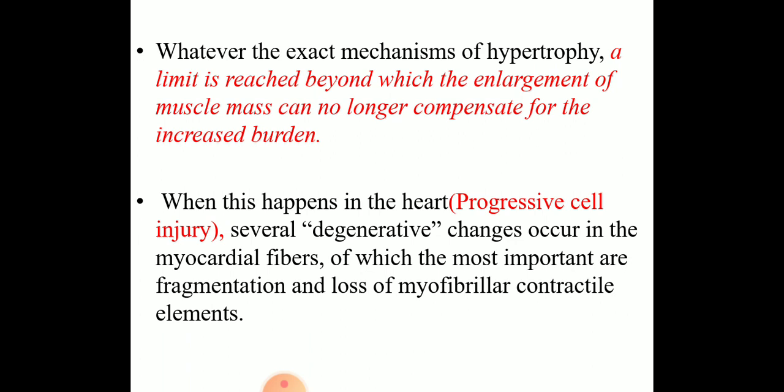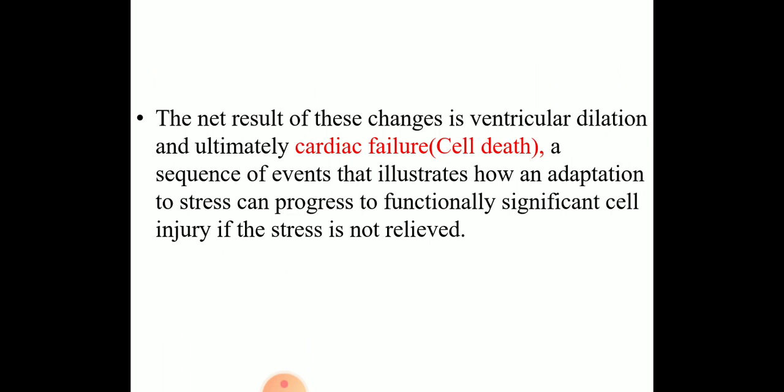Whatever the exact mechanism of hypertrophy, a limit is reached beyond which the enlargement of muscle mass can no longer compensate for the increased burden. When this happens in the heart, in the form of progressive cell injury, several degenerative changes take place in the myocardial fiber — the most important being fragmentation and loss of myofibrillar contractile elements. The net result is ventricular dilatation and ultimately cardiac failure, illustrating how an adaptation to stress can progress to cell injury if stress is not removed.